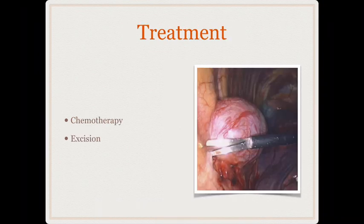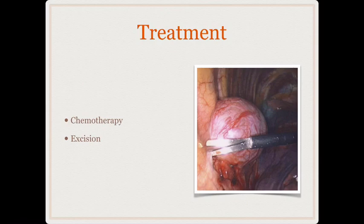Surgery is the mainstay of treatment for these diseases. If lymphoma is suspected, we do a CT-guided biopsy and institute appropriate therapy based on histopathology. For all other tumors — thymoma, neurogenic tumors of the posterior mediastinum, and atrial myxomas — the treatment of choice is surgical excision.